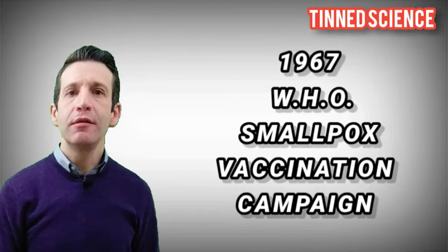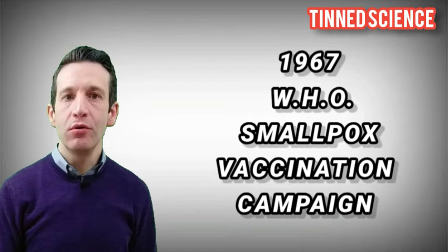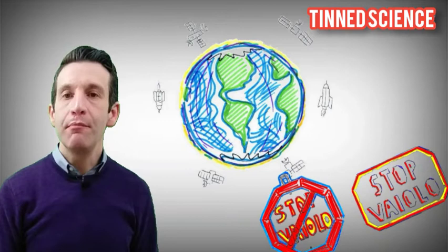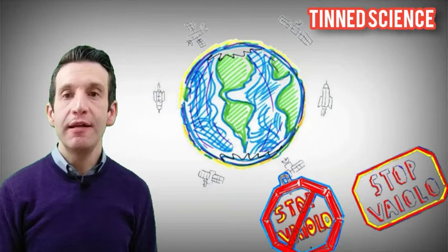In 1967, an important agreement was achieved between the World Health Organization and all the countries around the world for a global vaccination campaign against smallpox. The ambitious goal was the full eradication of the pathogen. Twenty years later, the smallpox was completely wiped out from the planet.